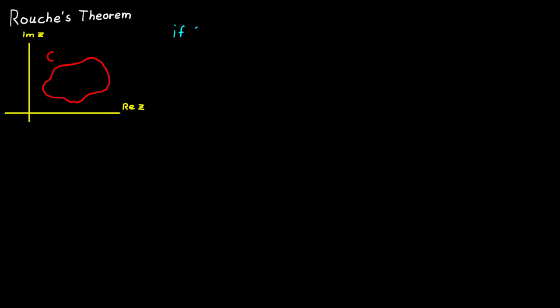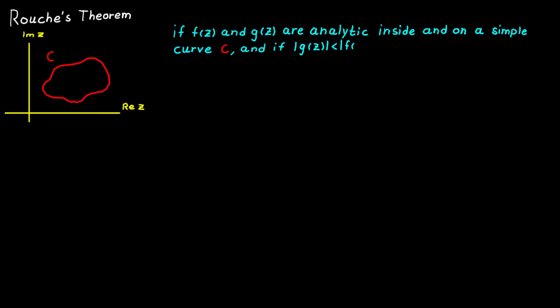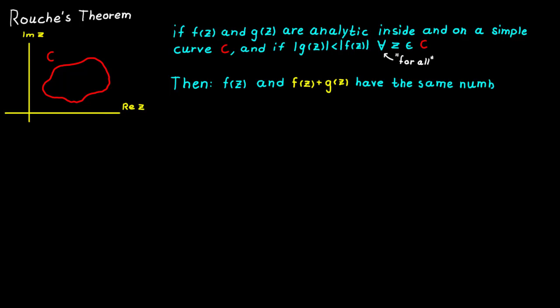Rouché's theorem states that if we have two functions f and g, which are both analytic inside and on a simple curve c, and if the absolute value of g is always smaller than the absolute value of f on this curve, then we know that the functions f and f plus g will have the same number of zeros inside of c.